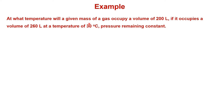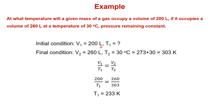The example for Charles' Law: at what temperature will a given mass of gas occupy a volume of 200 liters, if it occupies 260 liters at 30°C with pressure remaining constant? Initial conditions: V1 is 200 liters, T1 we need to calculate. Final condition: V2 is 260 liters, temperature is 30°C, which we convert to 303 Kelvin. Putting these values into V1/T1 equals V2/T2, we calculate T1 as 233 Kelvin.